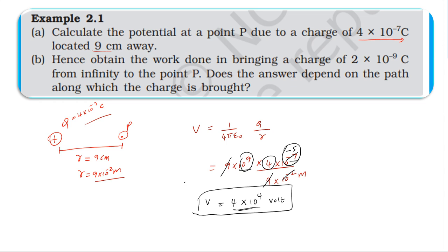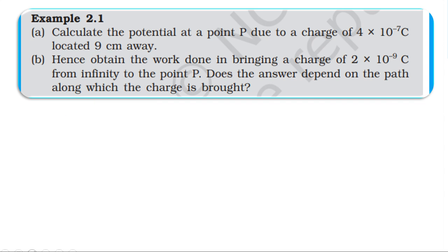Now the second sub-question: obtain the work done in bringing a charge of 2×10⁻⁹ coulomb from infinity to the point P. Does the answer depend on the path along which the charge is brought? The charge producing the field is 4×10⁻⁷ coulomb, and the point P is 9 centimeters away — this was the first question's setup.